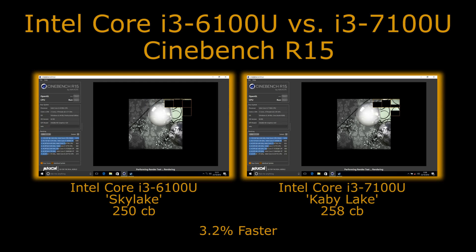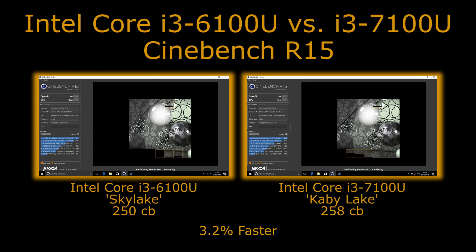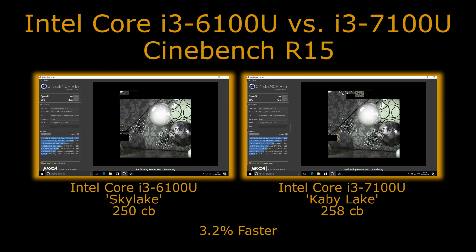Kaby Lake is really just a refinement of Skylake and the key difference between the two chips is that the Kaby Lake chip has 100MHz extra on base clock, and there is no turbo on this being an i3 part. So from a 4.5% increase in clock speed we're getting a 3.2% increase in performance — that's not unreasonable, especially when you consider these are in the same power budget; they are both 15-watt chips. It's not perfect scaling with clock speed but it's around about what you'd expect.